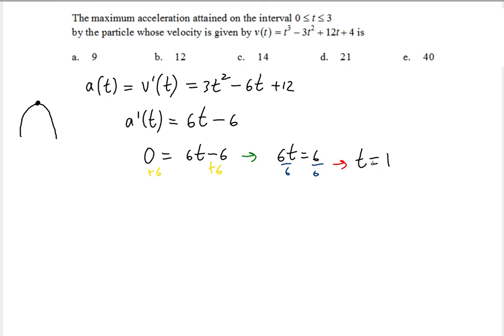Now you're going to be checking at three critical values the acceleration function that we found, and then you're going to see which one gives you the maximum acceleration. First we're going to start from smallest to largest, so t equals 0, then t equals 1, and then the third is the second endpoint t equals 3.